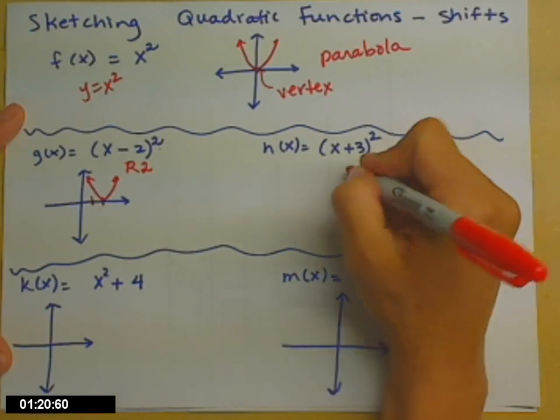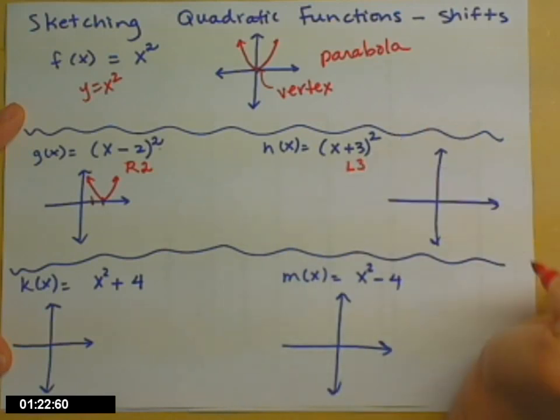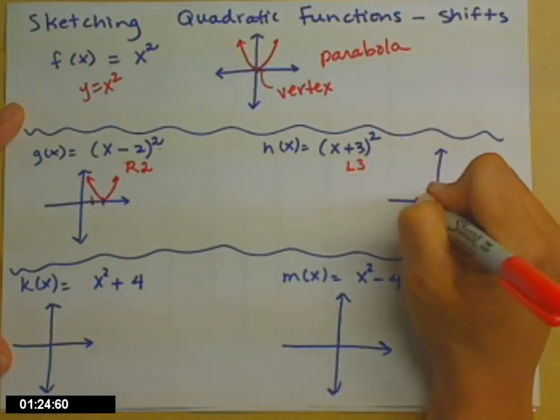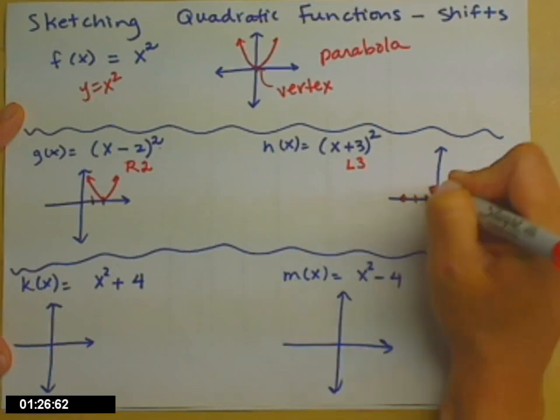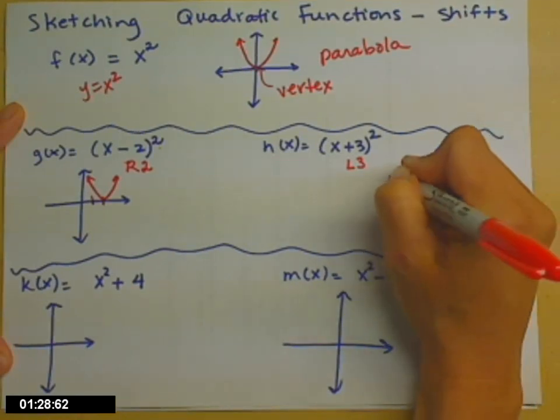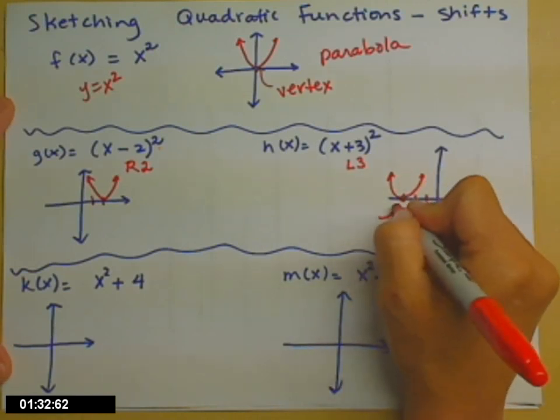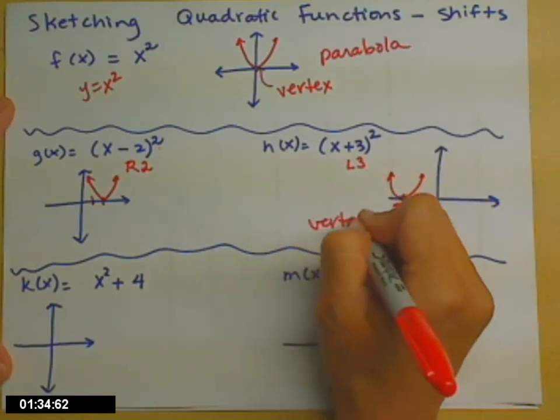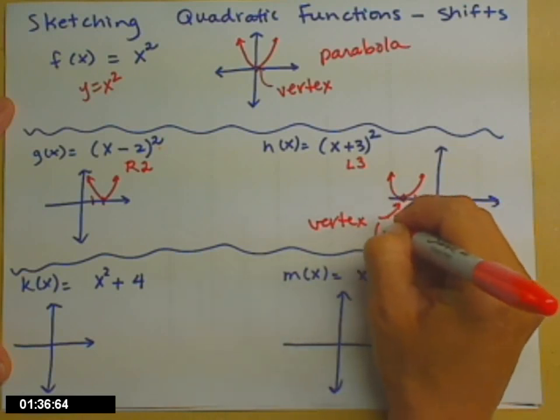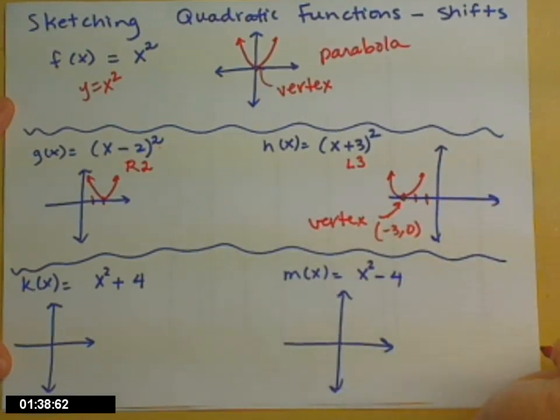If I have a plus inside, that actually moves it left 3 spaces, and then I draw the exact same picture. So the vertex for h is the point (-3, 0).